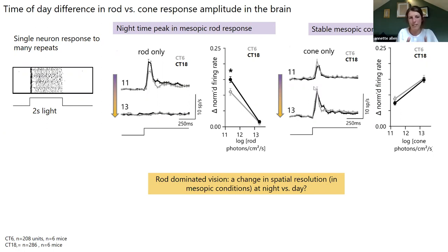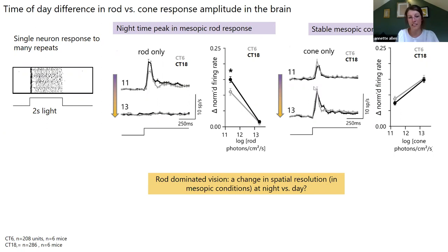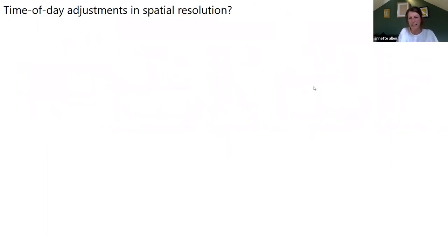What happens at different times of day? Importantly, the rhythm we saw in the retina is replicated in the brain — we see a rhythm in the amplitude of rod responses in the dorsal LGN, but a stable response in the cone-driven responses. We find again evidence of a change in the amplitude of rod-driven responses at nighttime compared to the day. And given that rod vision tends to have a lower spatial resolution, with an enhanced rod input at night, we might hypothesize that there'd be a change in spatial resolution of visual responses recorded at nighttime versus daytime.